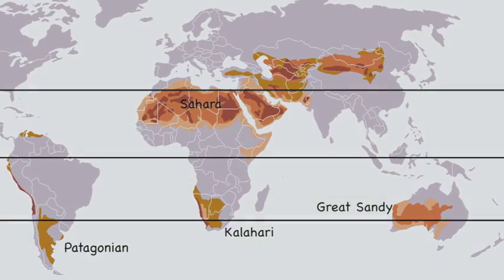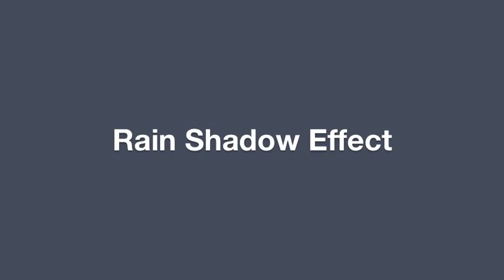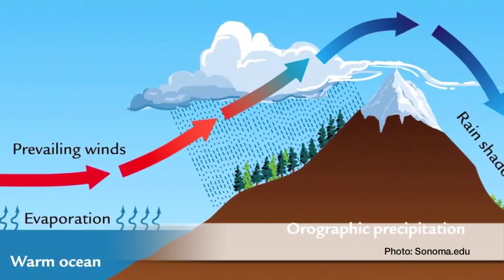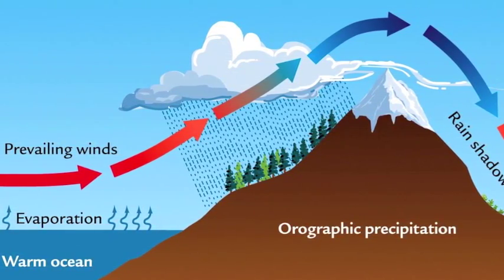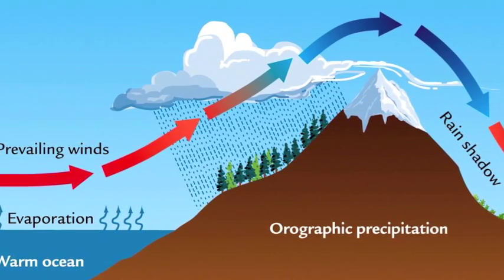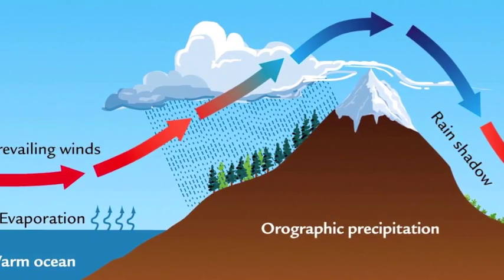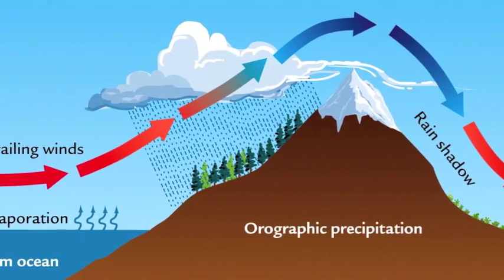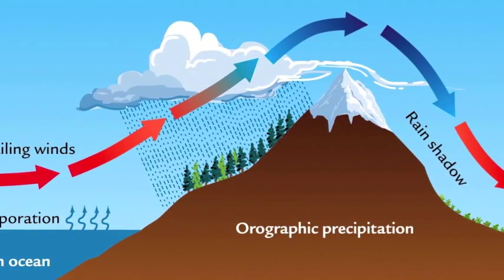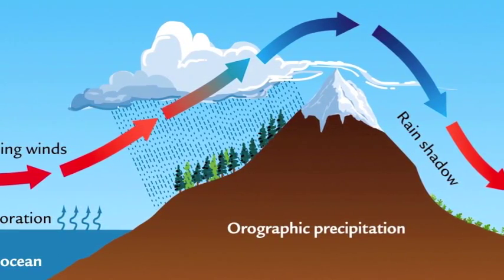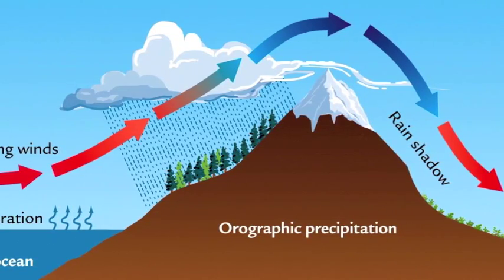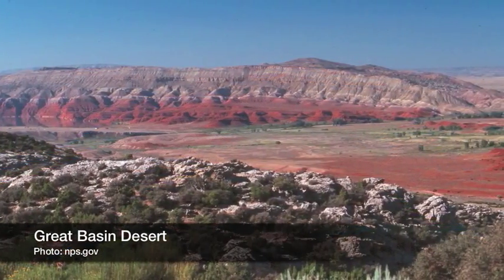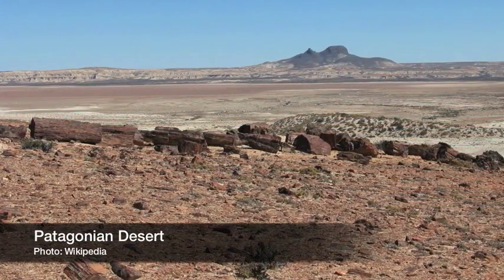The second cause is the rain shadow effect caused by mountain ranges. Air is forced upward over mountains and cools as it ascends. Cool air can't hold as much water vapor as warm air, so most water vapor condenses out of cool air at high elevations and falls as precipitation on the windward slopes of mountains. Once over the mountains, the air warms as it descends, but now it's dry, resulting in a steady flow of warm, dry air on the downwind side of mountain ranges. The Great Basin and Patagonian deserts are rain shadow deserts caused by the Sierras and the Andes, respectively.